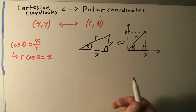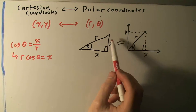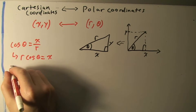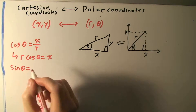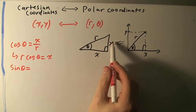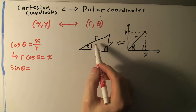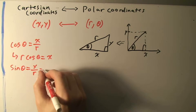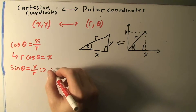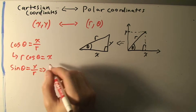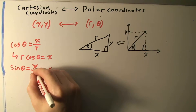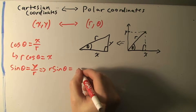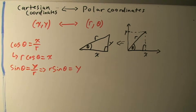Similarly, if we want to represent the other leg as a function of r and theta, we use the fact that the sine of angle theta is going to be equal to the opposite side, which is y, over the hypotenuse r. So sine theta equals y over r, and solving for y gives us y = r·sin(θ).